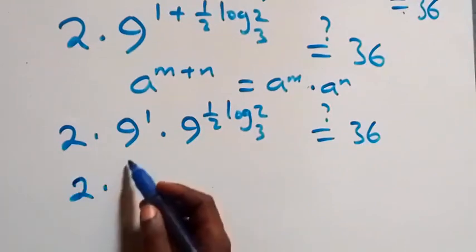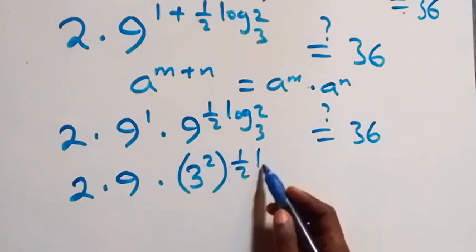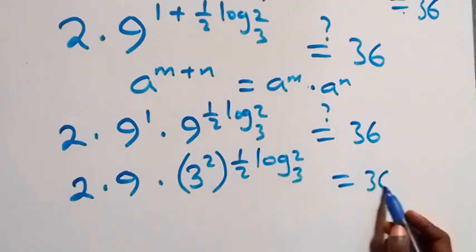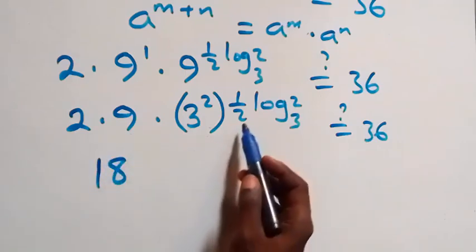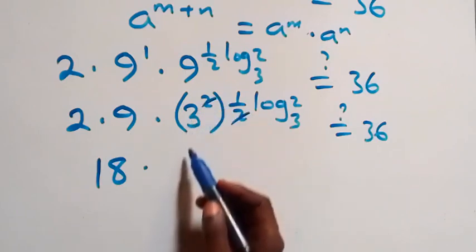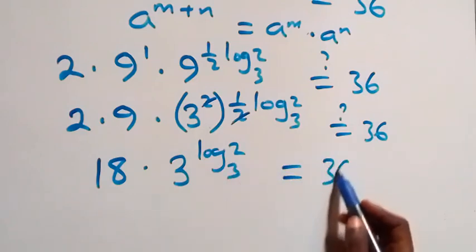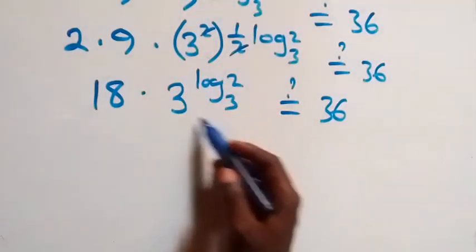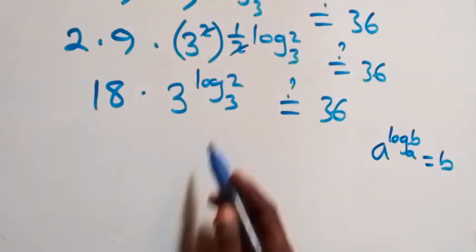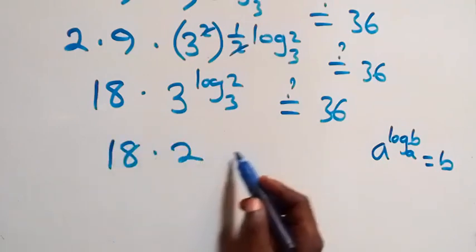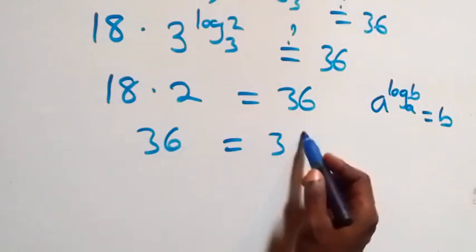This is 2 times 9 times 9^(½·log₃2). Writing 9 as 3², we get 3² raised to the power ½·log₃2. The 2 in the exponent and the ½ cancel each other, leaving 3^(log₃2). Using the identity a^(log_a(b)) equals b, this gives us 2. So we have 2 times 9 times 2, which is 18 times 2, equals 36, and indeed 36 equals 36.